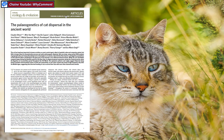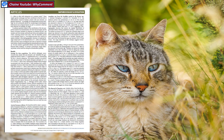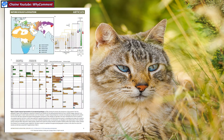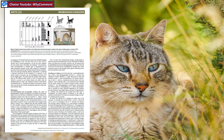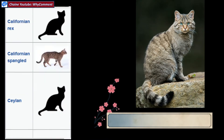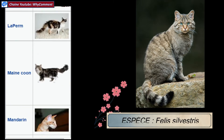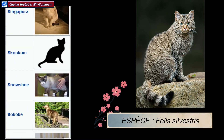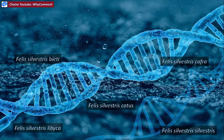Dans une étude parue dans la revue Nature Ecology en juin 2017, la chercheuse Eva Maria Giegel et ses collaborateurs ont retracé l'histoire génétique de cette domestication. Cette étude est basée sur l'analyse de l'ADN ancien, plus de 230 spécimens répartis sur plus de 10 000 ans. Même s'il existe plus de 90 races de chats dans le monde, qu'ils soient sauvages ou domestiques, ils appartiennent tous à une seule et même espèce : Felis silvestris.